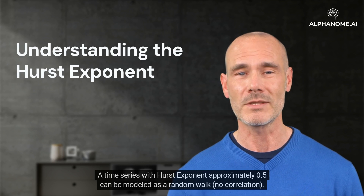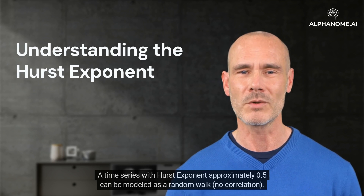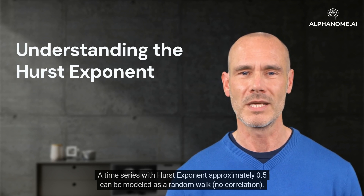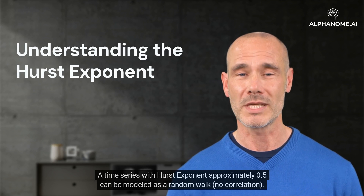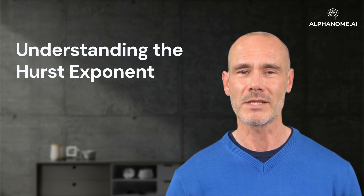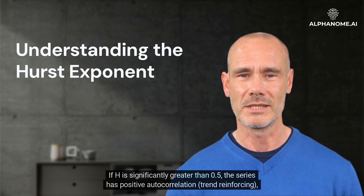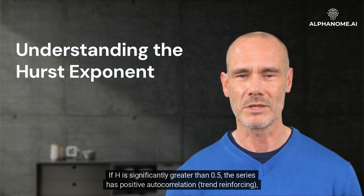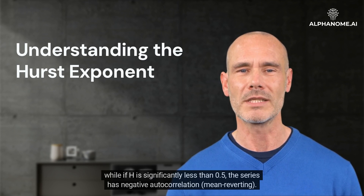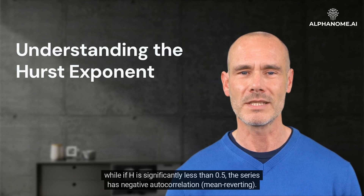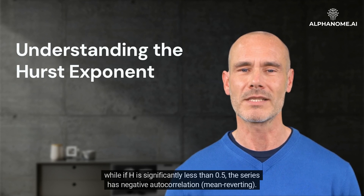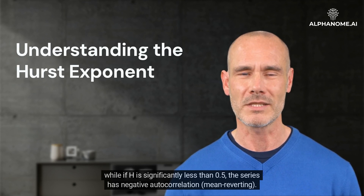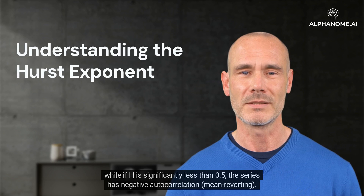A time series with a Hurst Exponent of approximately 0.5 can be modeled as a random walk, indicating no correlation. If H is significantly greater than 0.5, the series has positive autocorrelation and is trend-reinforcing. If H is significantly less than 0.5, the series has negative autocorrelation and is mean-reverting.